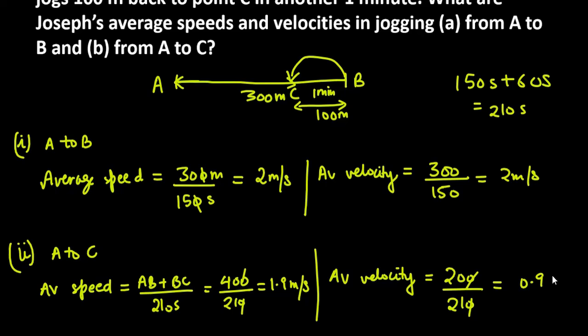Or, 20 over 21 ko aap kaise reduce kar sakte ho? 0.95 meter per second. Toh, aap dekh sakte ho, kaise average speed or average velocity mein change aaya according to positions.